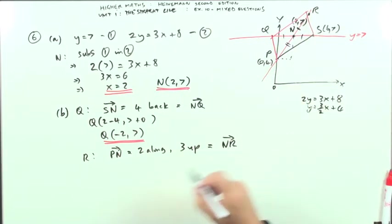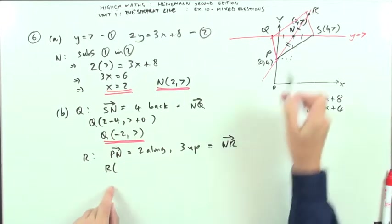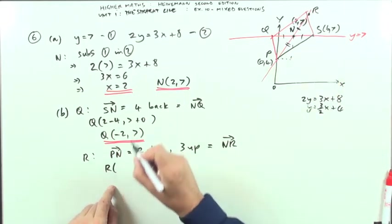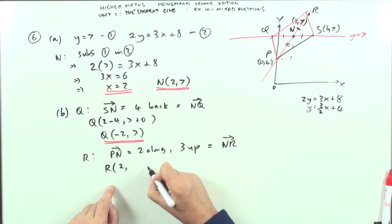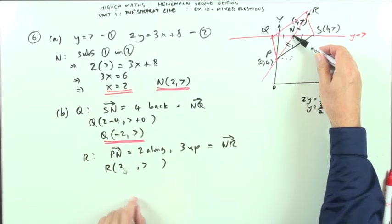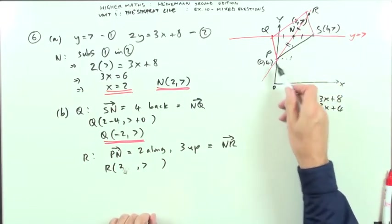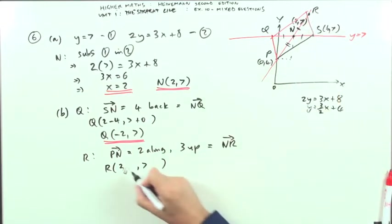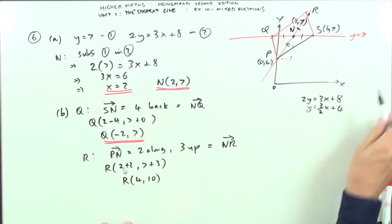Which means that's the same move as going from N to R. To get to R, I would start at N, which was (2,7), and then just add those moves on to it. N's at (2,7), R's further on. It's 2 further along and 3 further up, so plus 2, plus 3. So R's going to be the point (4,10).